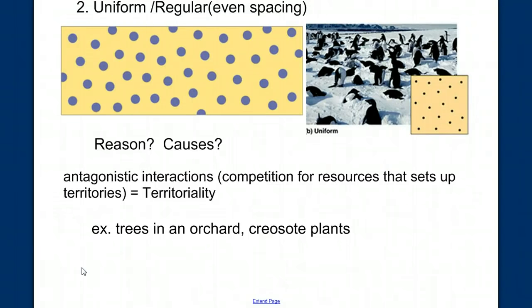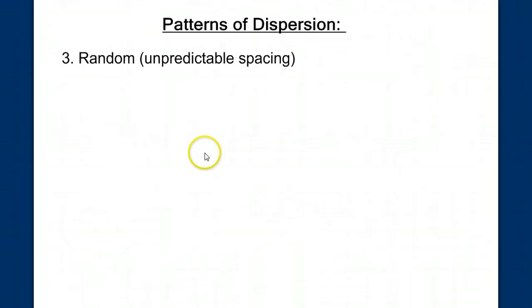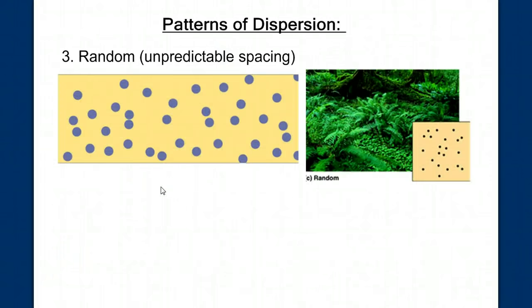Our third and final pattern of dispersion is random, where we see an unpredictable spacing. Again, the question is why? Under what conditions would we see this pattern where there seems to be no reason to stay away, or no reason to clump? Pause the video and think if you can come up with the conditions under which we'd get this type of pattern of dispersion.